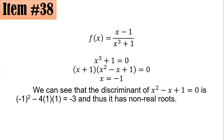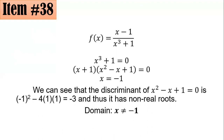For the second factor x squared minus x plus 1, computing the discriminant: b squared minus 4ac with a equals 1, b equals negative 1, c equals 1 gives 1 minus 4, which equals negative 3. Since it's negative, x squared minus x plus 1 has no real roots. So only x equals negative 1 makes the denominator zero, and it must be excluded from the domain. The domain is all x not equal to negative 1, letter d.